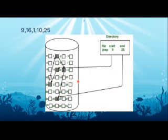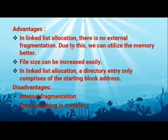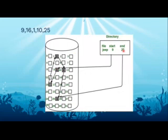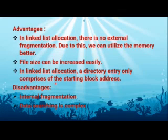The advantages of linked list allocation: there is no external fragmentation, so we can place memory better. Also, file size can be increased easily — for example, if the current end block is 25, you can extend it to 40 anytime. Additionally, the directory entry only needs to store the starting block address.